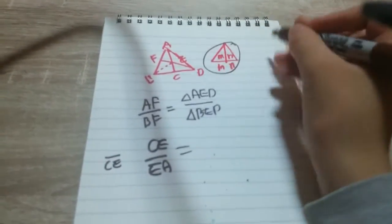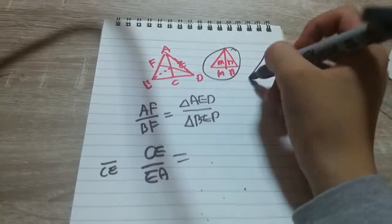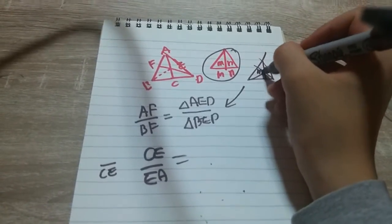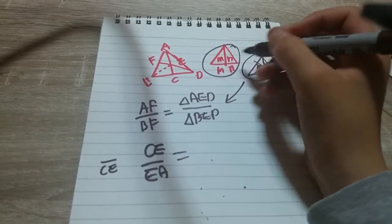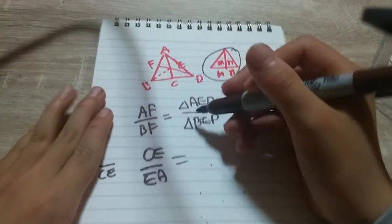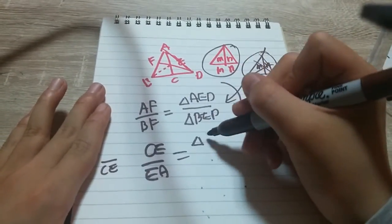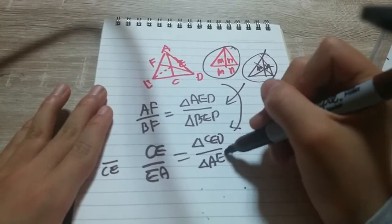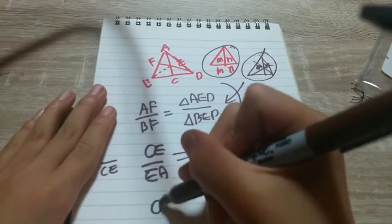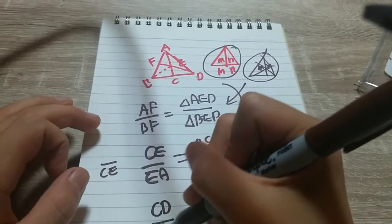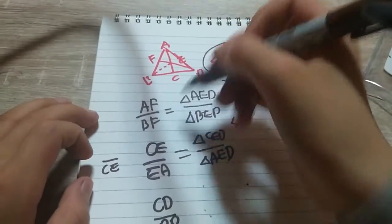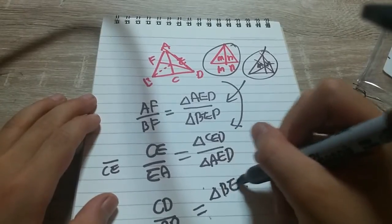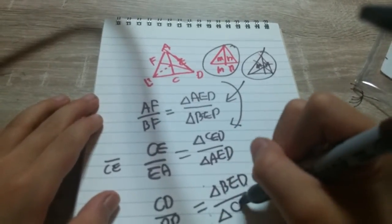This using this, and this is using this. And if you use that, it equals to the triangle CED over triangle AED. Okay, and the same for CD over BD, which equals triangle BED over triangle CED.